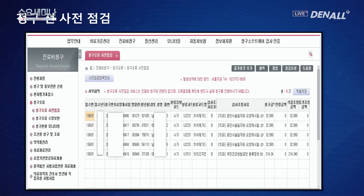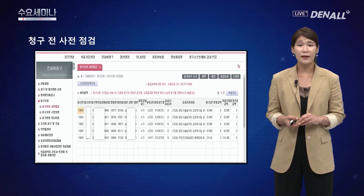날짜를 지정해서 조회하면 공단 등록 날짜가 맞지 않는 내역 등이 나타납니다. 사전 점검을 통해 등록 관련 부분을 한 번 체크하고 다시 보낼 수 있기 때문에 삭감을 방지할 수 있습니다. 반드시 등록이 안 된 건지, 등록 날짜가 다른지 확인 작업이 필요합니다.